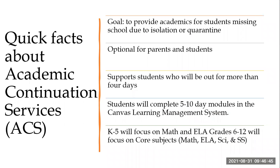Some quick facts about Academic Continuation Services, or ACS. The goal is to provide academics for students missing school due to isolation or quarantine. It is an optional program for parents and students, and it supports students who will be out for more than four days. Students will complete five to ten day learning modules in the Canvas Learning Management System, the online learning system used for the program.